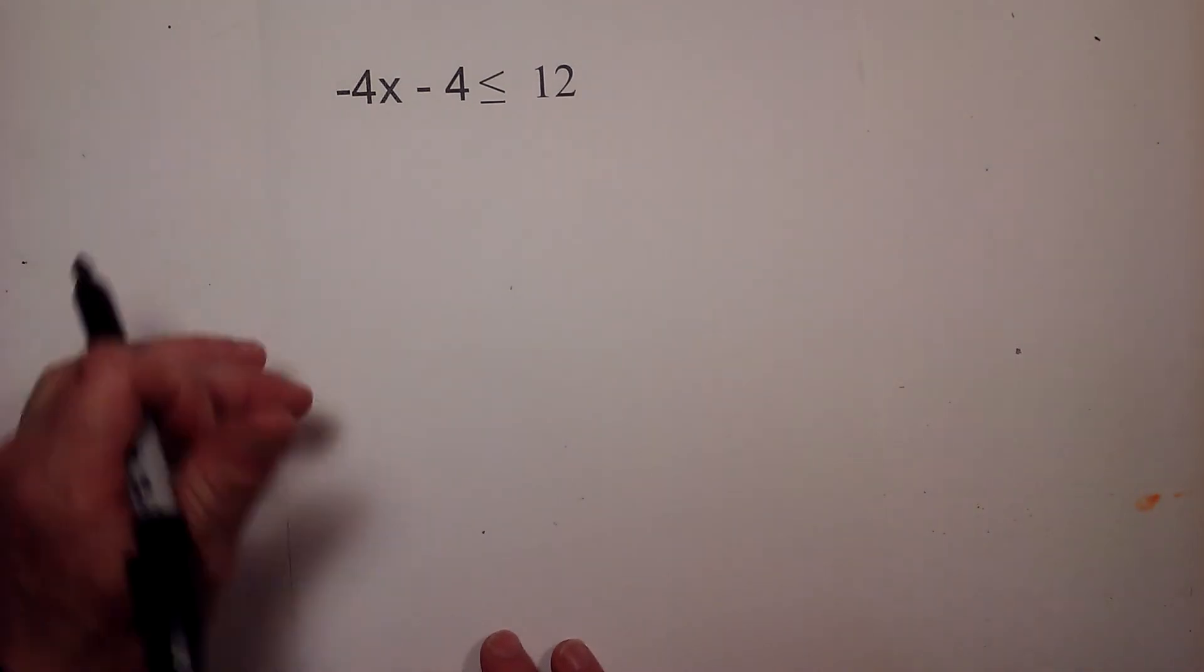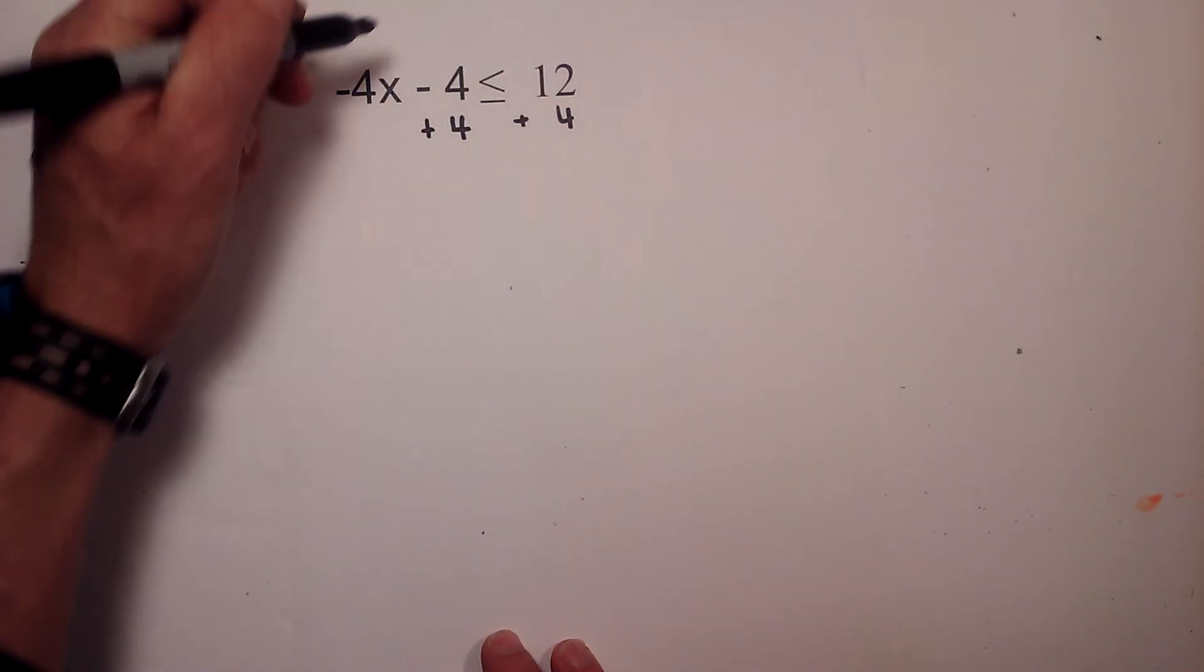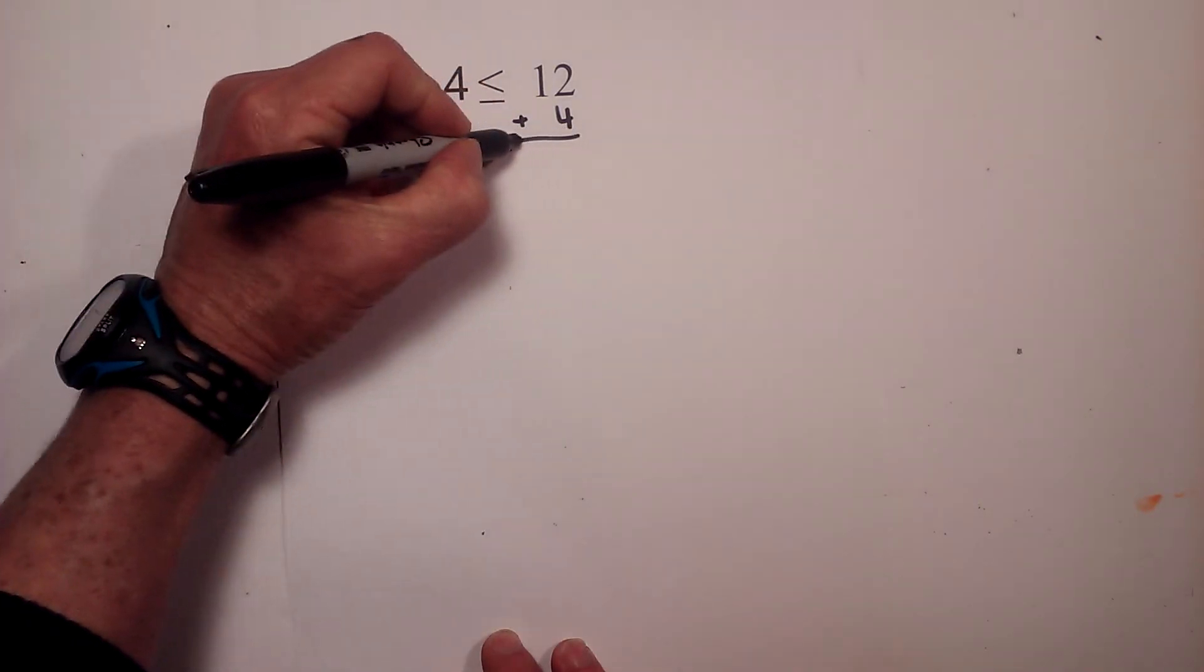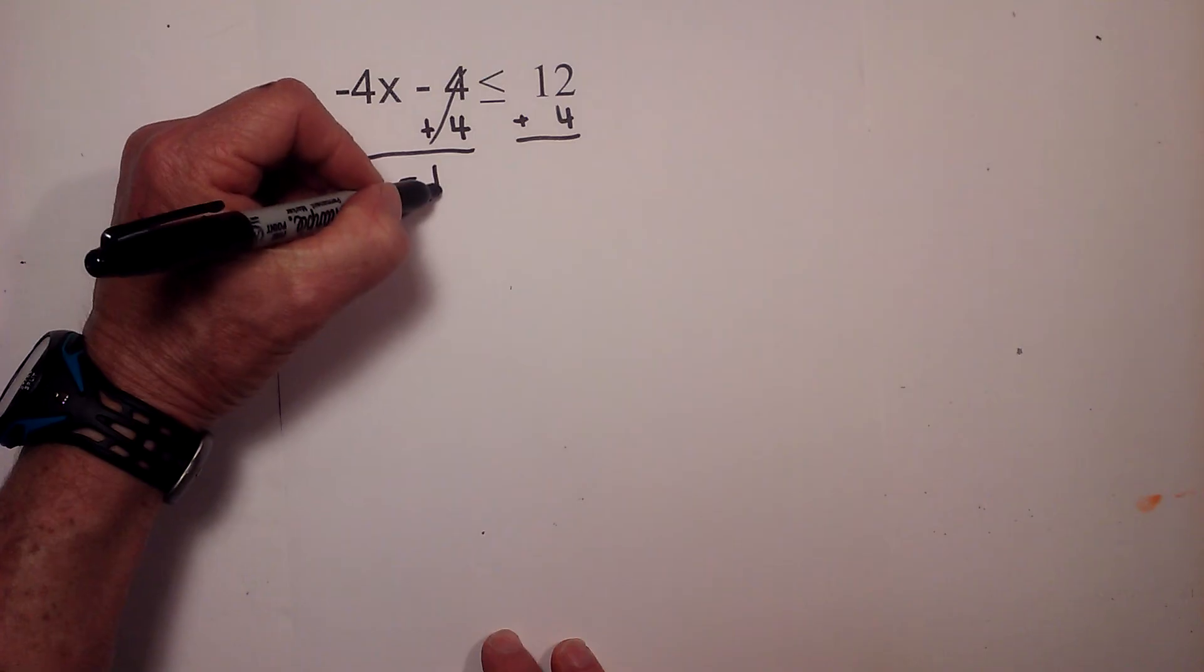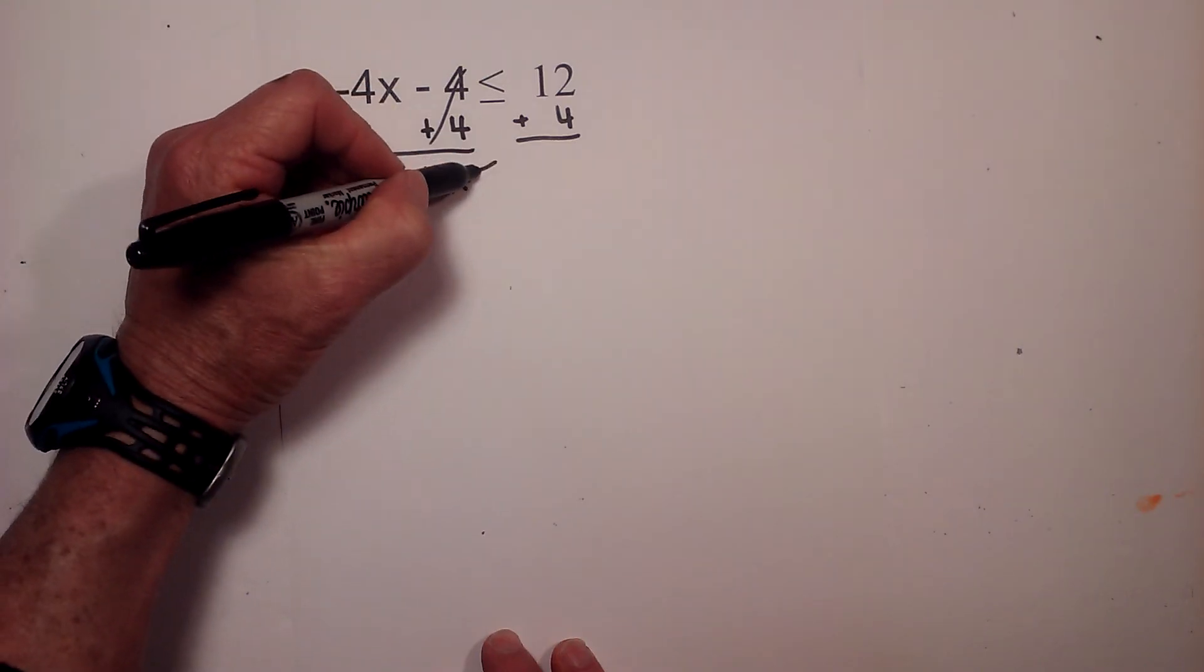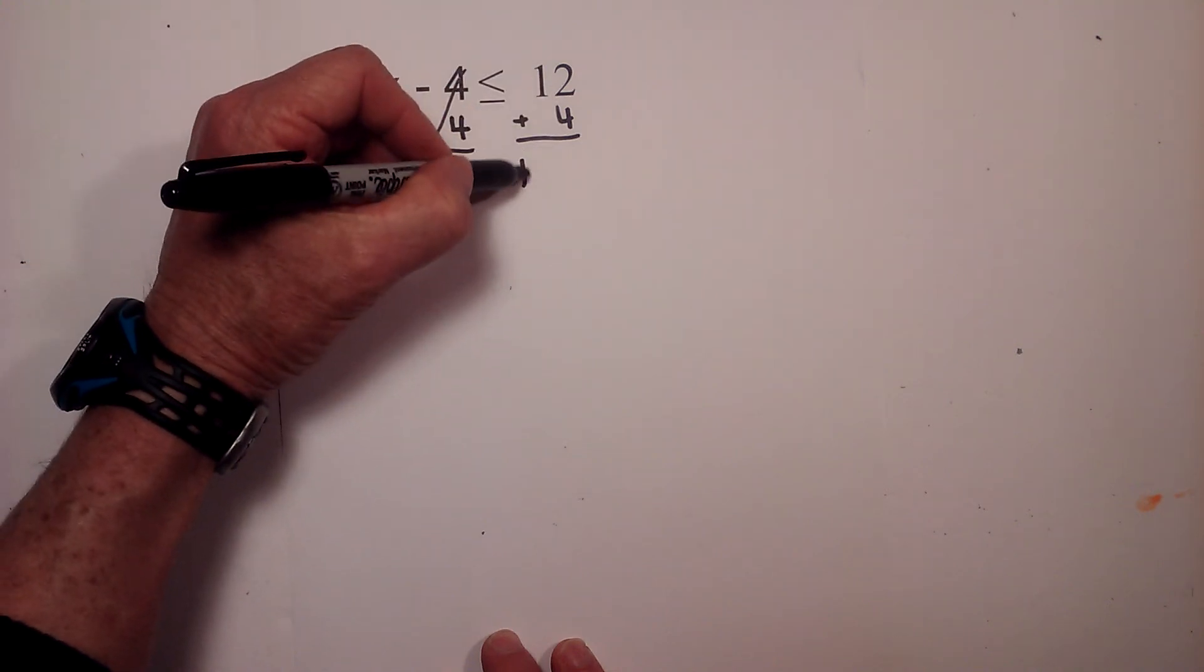We will begin by adding 4 to each side, draw a line. And now these cancel, I'll bring down the negative 4x is less than or equal to. This is pretty easy, 12 plus 4 is 16.